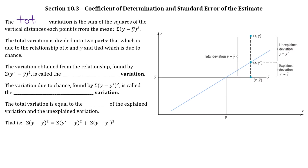The total variation is the sum of the squares of the vertical distances each point is from the mean. Mathematically, that's sigma of (y minus y-bar) squared. And then the total variation is divided into two different parts: the first part is the one due to the actual relationship between x and y, and the other part is the part that's due to chance.